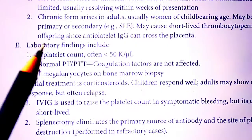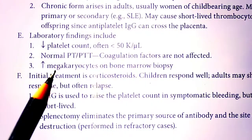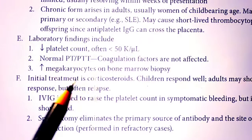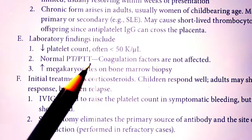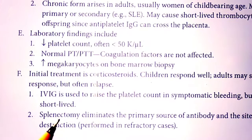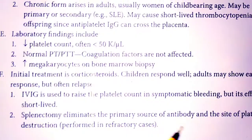Laboratory findings in ITP show a decreased platelet count and increased megakaryocytes in bone marrow biopsy, as megakaryocytes are the precursor forms of platelets. Treatment involves corticosteroids to suppress immune activity, or splenectomy, which eliminates the primary source of auto-antibodies and the site of platelet destruction.